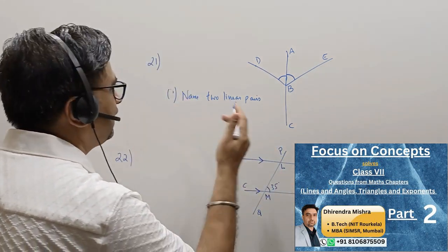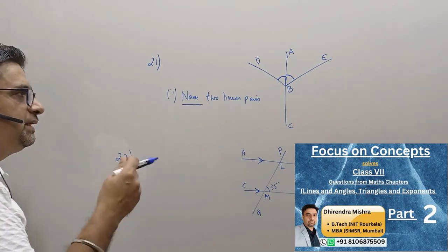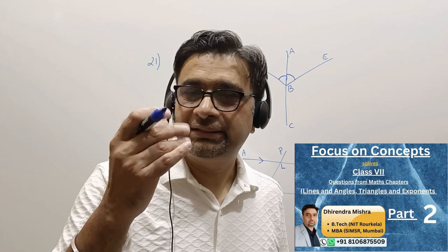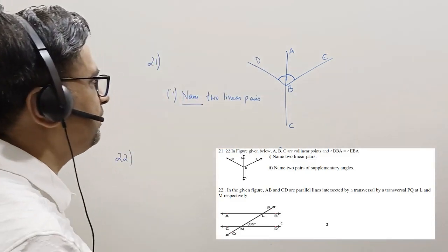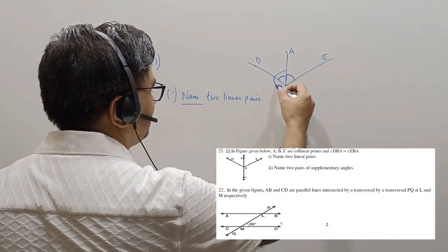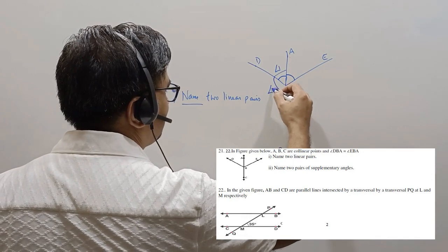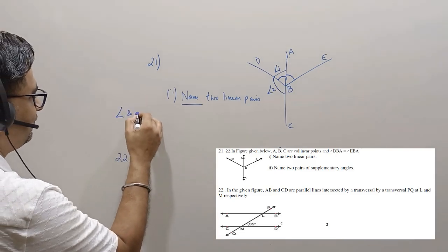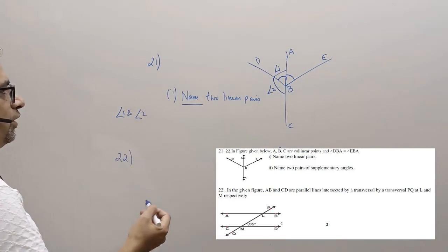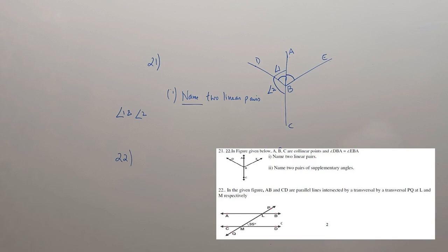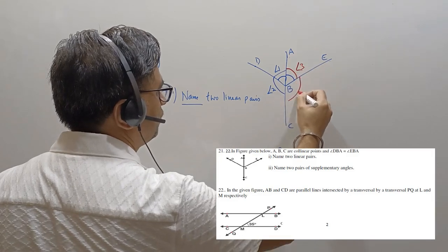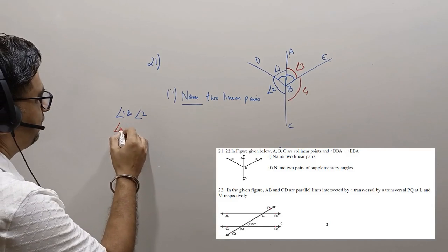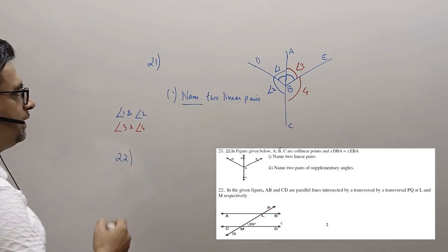What are all the linear pairs? A linear pair is a pair comprising two adjacent angles which are supplementary. We can see that if I call this angle 1 and this angle 2, then angle 1 and angle 2 form one linear pair. Let me call the other angles angle 3 and angle 4. Angle 3 and angle 4 is another linear pair.